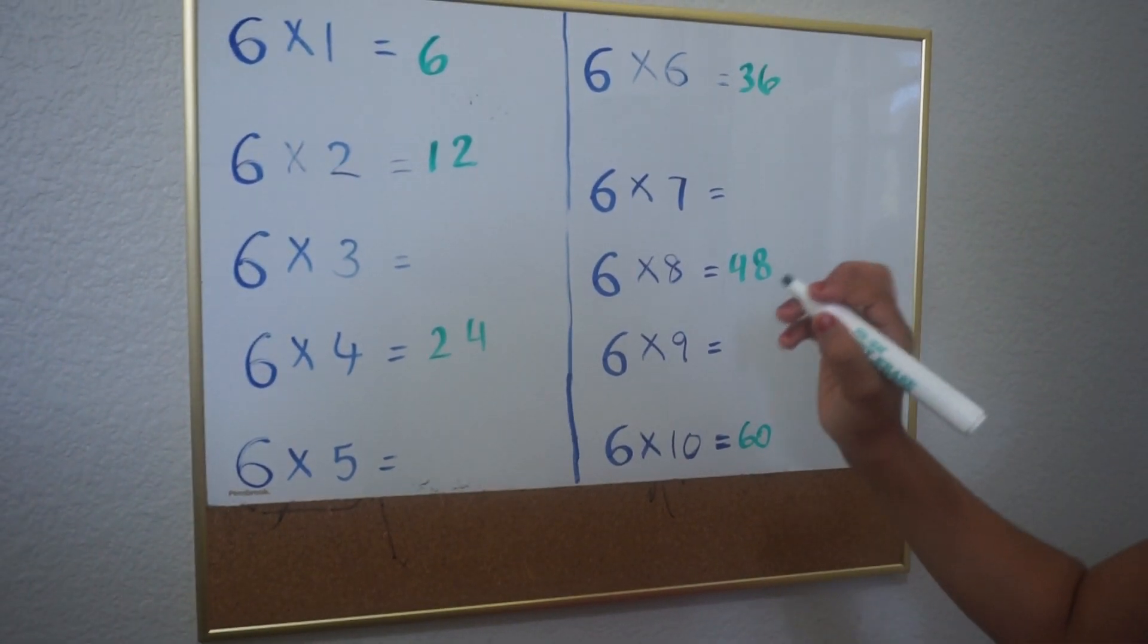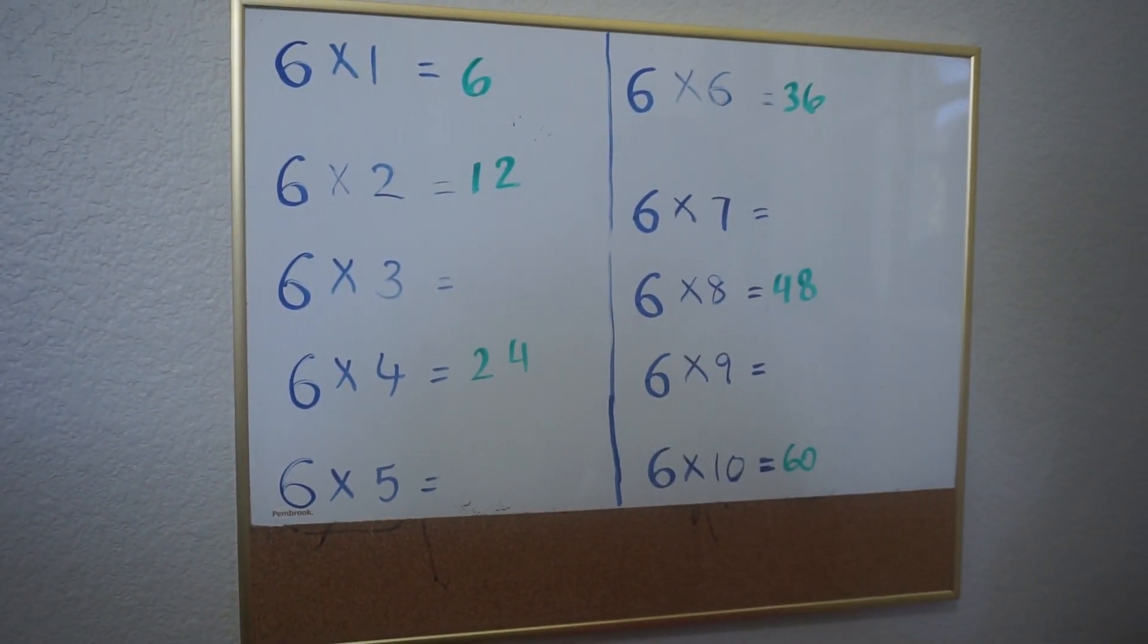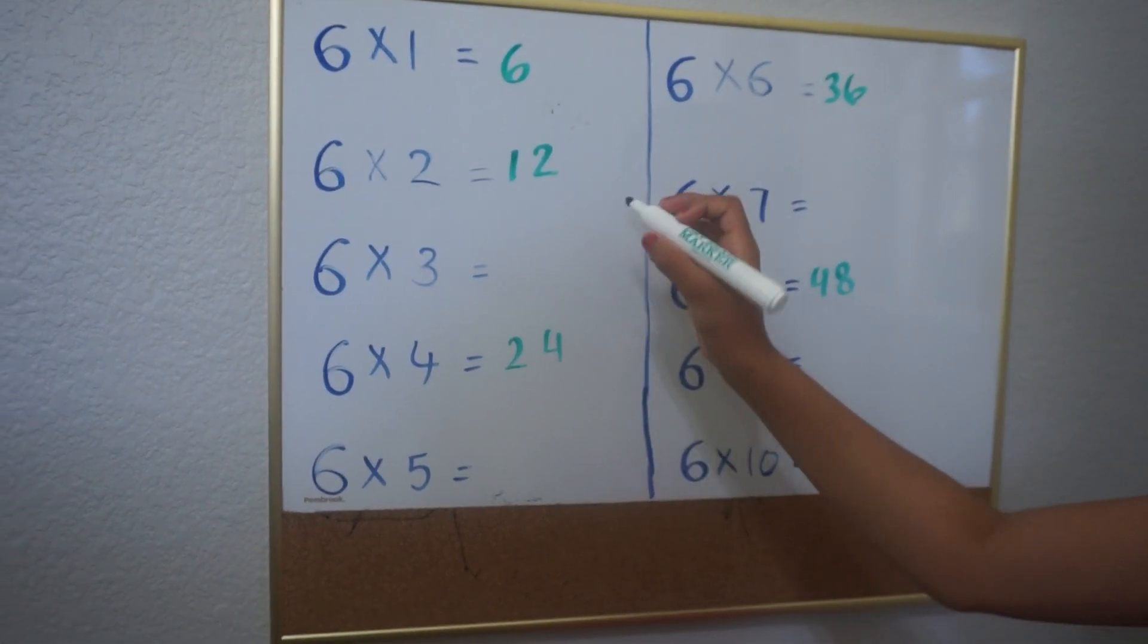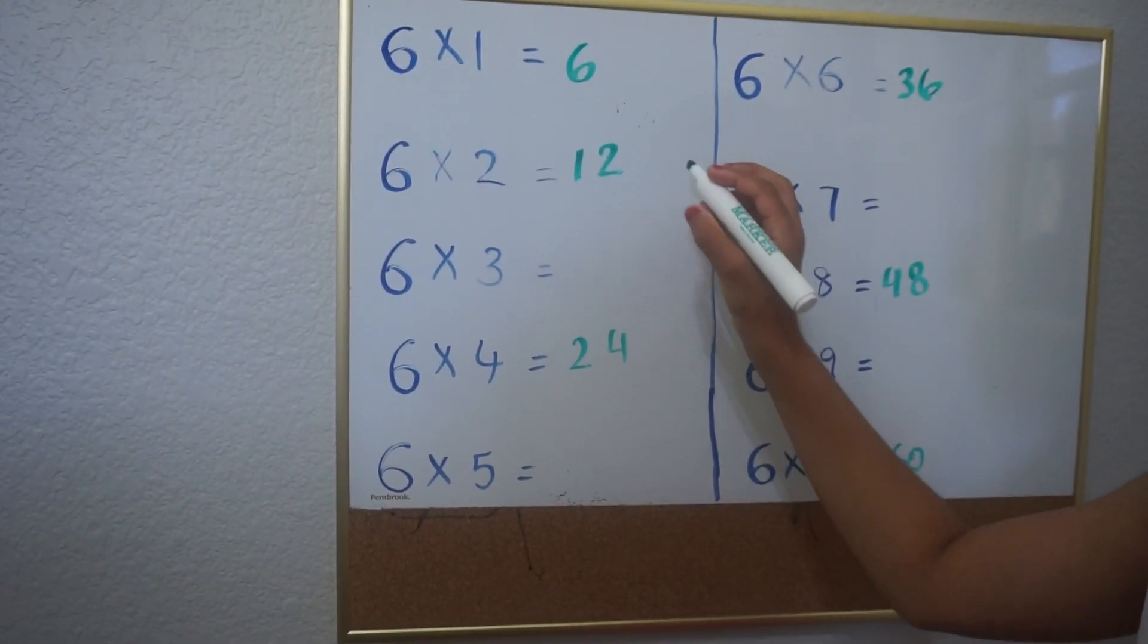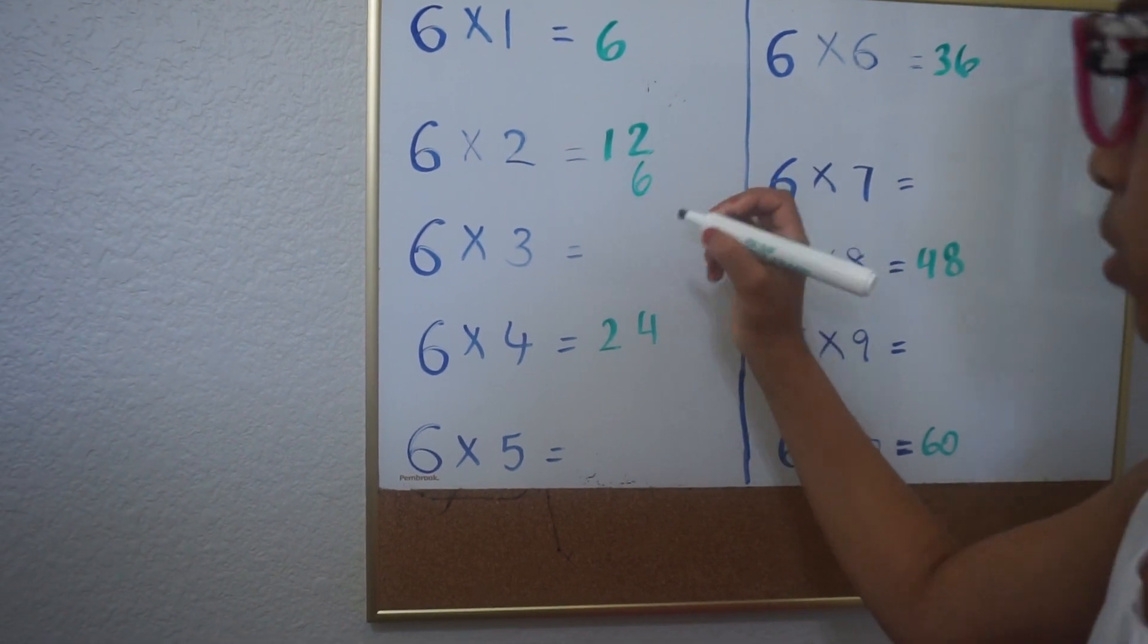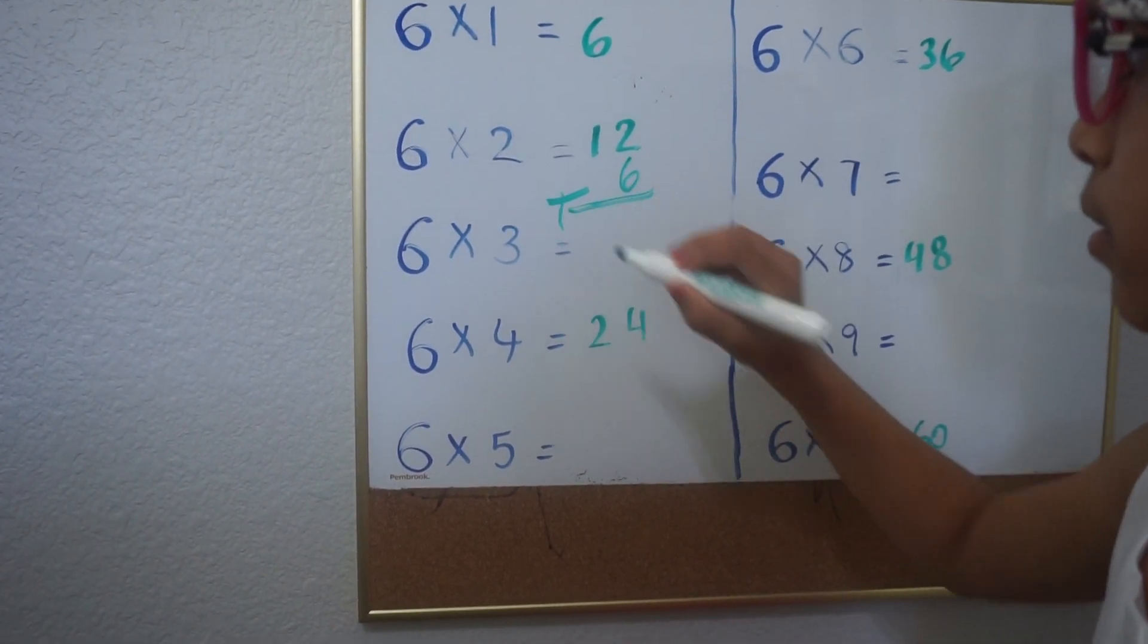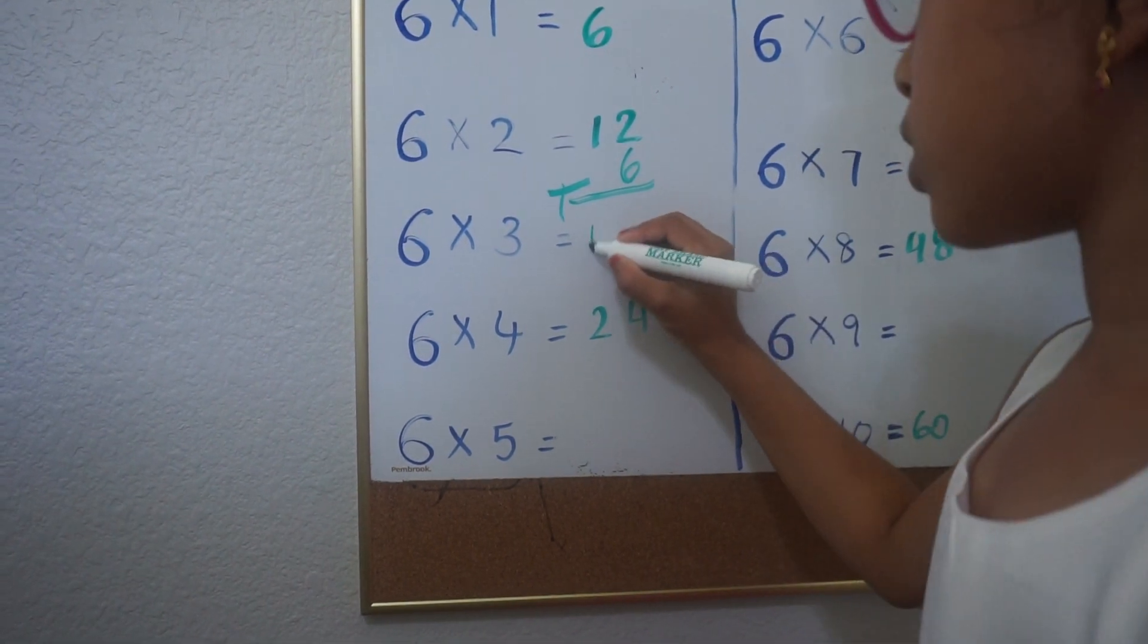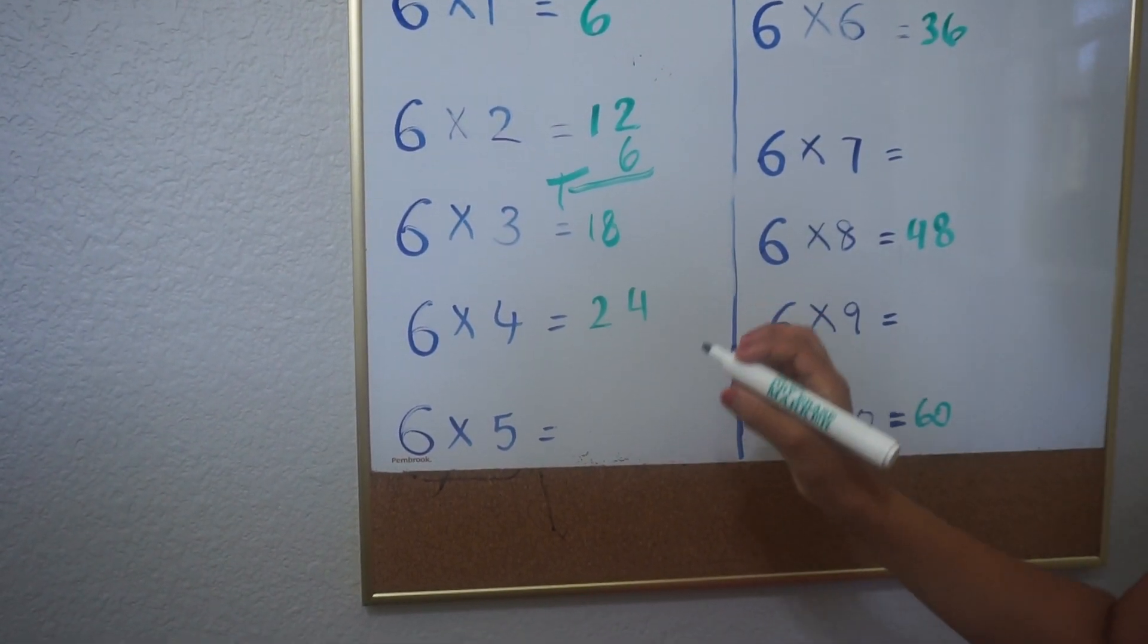For the odd numbers, you just add 6 with the number above. Like for example, there's 12 here. So I put this, we add. And then 6 plus 12 equals 18, so you put 18 over here.